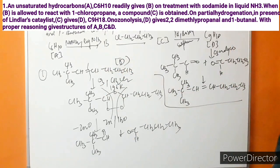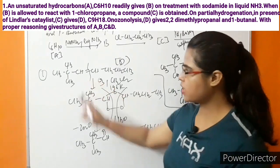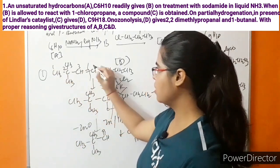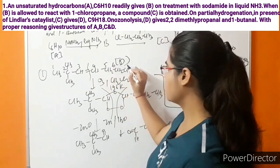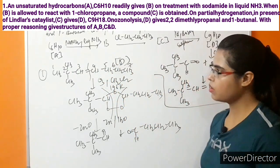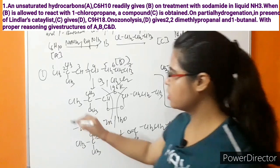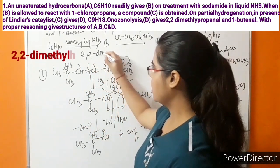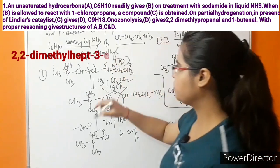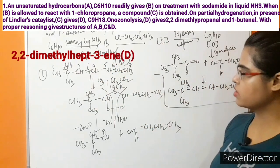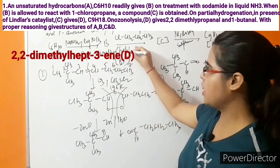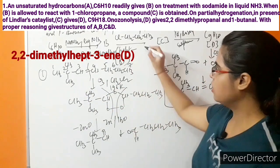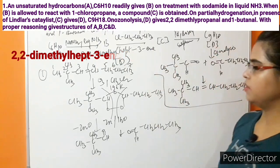The IUPAC name of compound D is determined by numbering: (CH3)3C-CH=CH-CH2-CH2-CH3. The longest chain has 7 carbons, with the double bond at position 3 and two methyl groups at position 2. So the IUPAC name is 2,2-dimethylhept-3-ene.